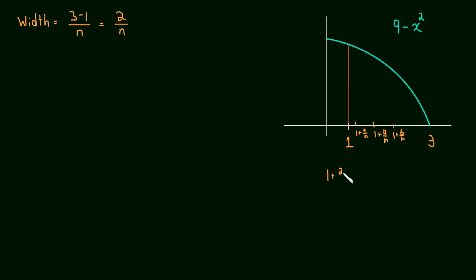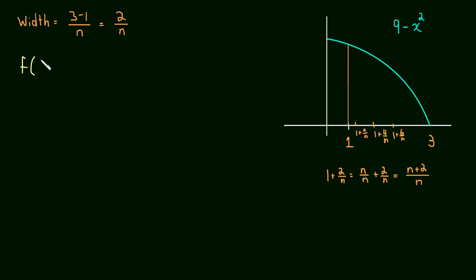What is 1 plus 2 over n? Well, this is equal to n over n plus 2 over n, which is n plus 2 over n. So now what we're going to do is find a pattern for the heights of this function. Our first x value is n plus 2 over n, so the first height is f of n plus 2 over n.